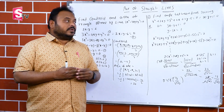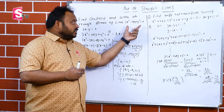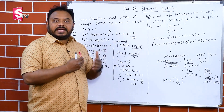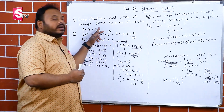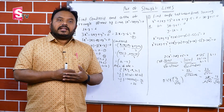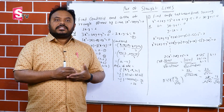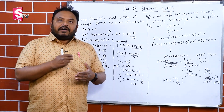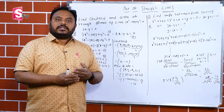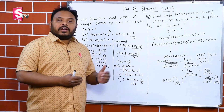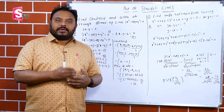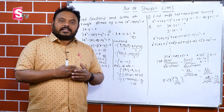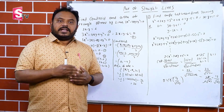The combined equation represents two lines, so we need to convert it into two separate lines, giving us three lines total. We solve pairs of lines — lines 2 and 3, lines 1 and 3, and lines 1 and 2 — to get the three vertices. Then we substitute into the centroid formula: (x1+x2+x3)/3, (y1+y2+y3)/3, and the area formula: ½|x1(y2−y3)+x2(y3−y1)+x3(y1−y2)|.